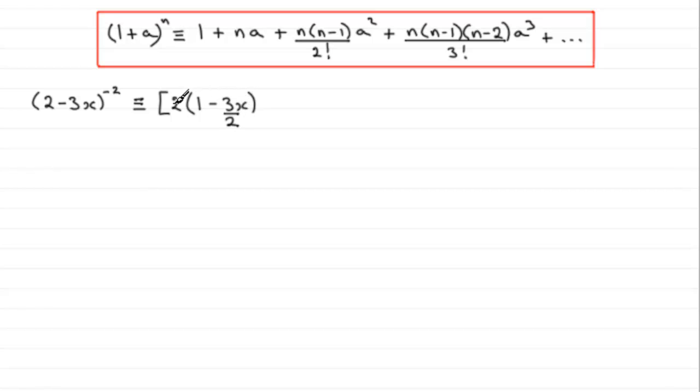So that 2 times minus 3x over 2 gives us the minus 3x. And then all of this is to the power minus 2.